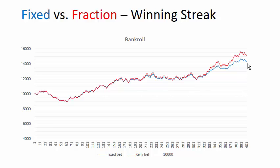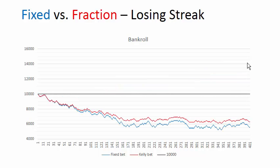Now let's take a look at a losing streak. In this losing streak, if you're betting a fraction, you cut back on your bets as your bankroll shrinks. So again, you do better betting a fraction than betting a fixed amount. With a fixed amount, your losses are greater.